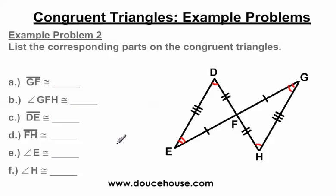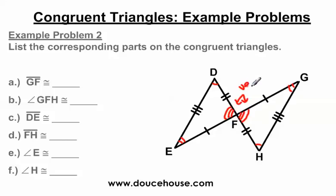Moving on to one more problem: list the corresponding parts on the congruent triangles. I know D and H go together because they each have one arc; E goes with G because those have two arcs. But there's a third angle here — this angle matches which angle over here? It matches this one. I can say that with 100% certainty because I've got two lines intersecting here, and the angles opposite of each other are congruent — these are vertical angles. I have a video on vertical angles if you need it. This is a very important rule in geometry that you're going to come across a lot.